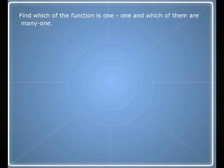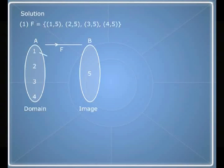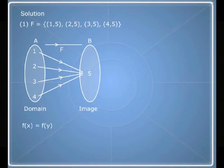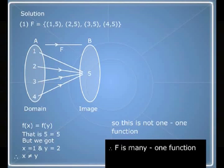Find which of the functions is one-to-one and which is many-to-one. F is the set of (1,5), (2,5), (3,5), and (4,5). The image of 1 is 5, and the images of 2, 3, and 4 are also 5. Since many distinct elements of the domain have the same image 5, we find that f of x equals f of y — that is 5 equals 5 — but x equals 1 and y equals 2, therefore x is not equal to y. So this is not a one-to-one function.